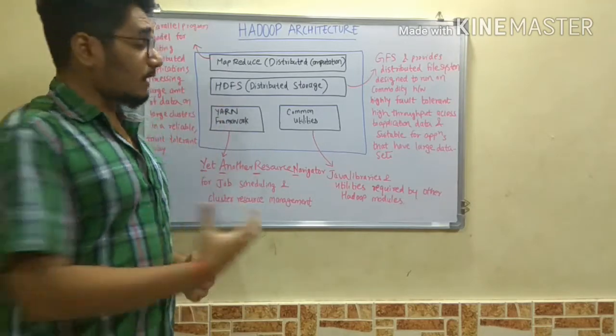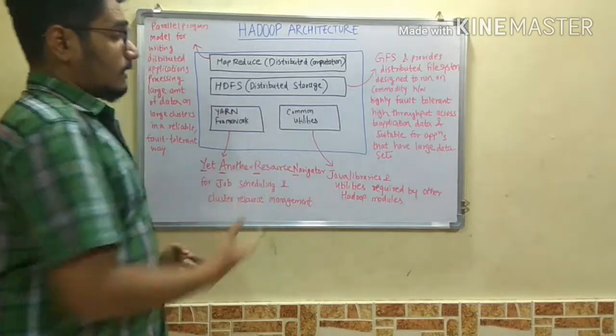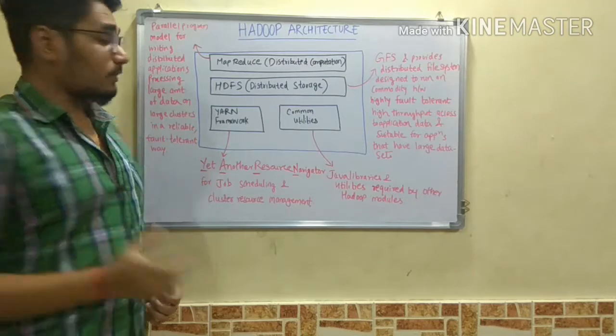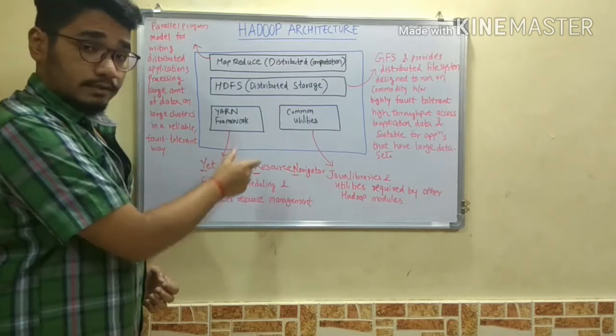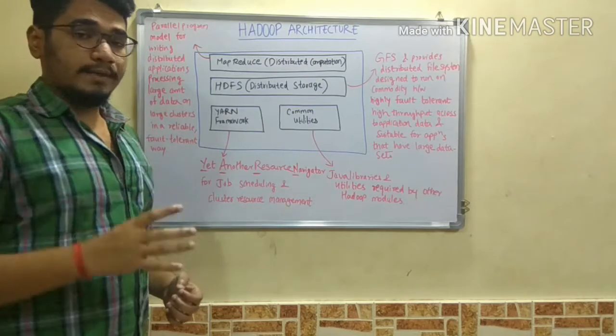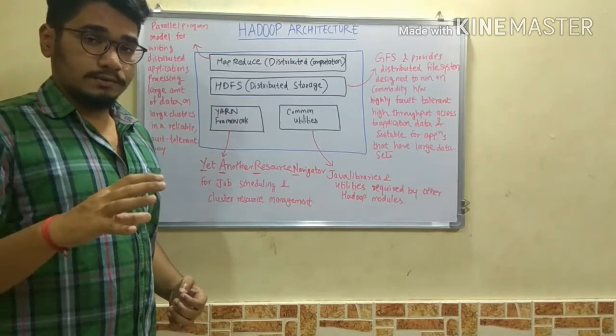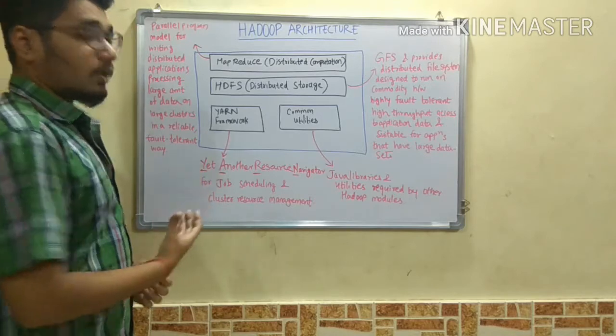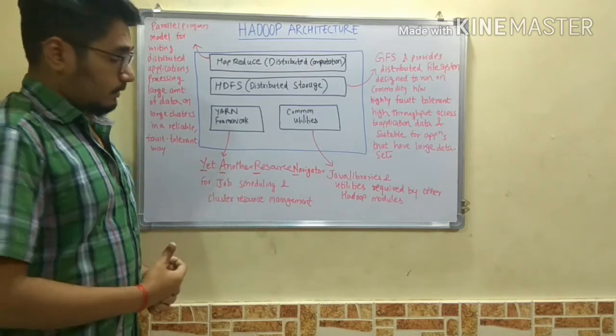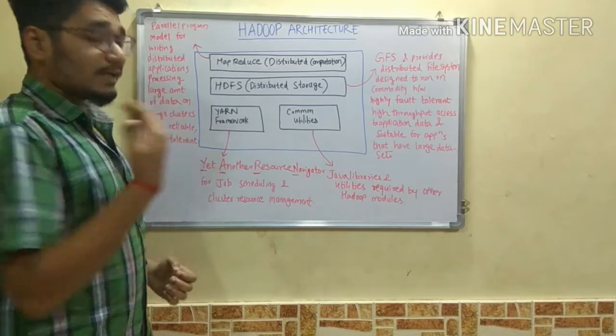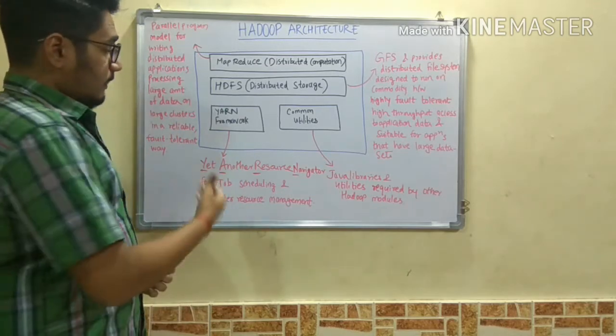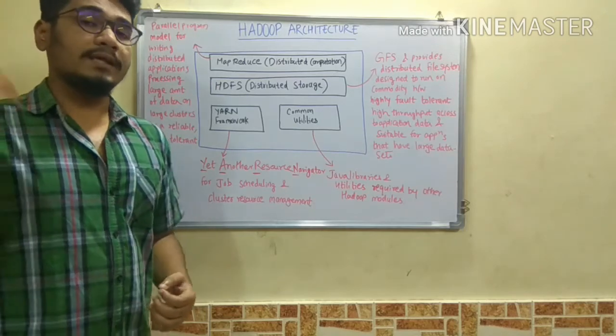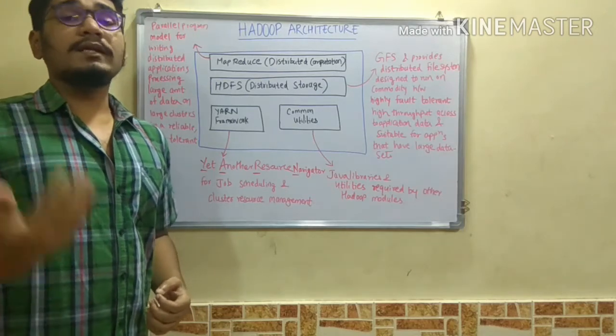Next is the YARN framework. YARN stands for Yet Another Resource Navigator. It would navigate to another resource for scheduling purposes. Its main job is job scheduling and cluster resource management. The YARN framework is basically for the data which is coming in and out and processing it in a more prioritized manner.